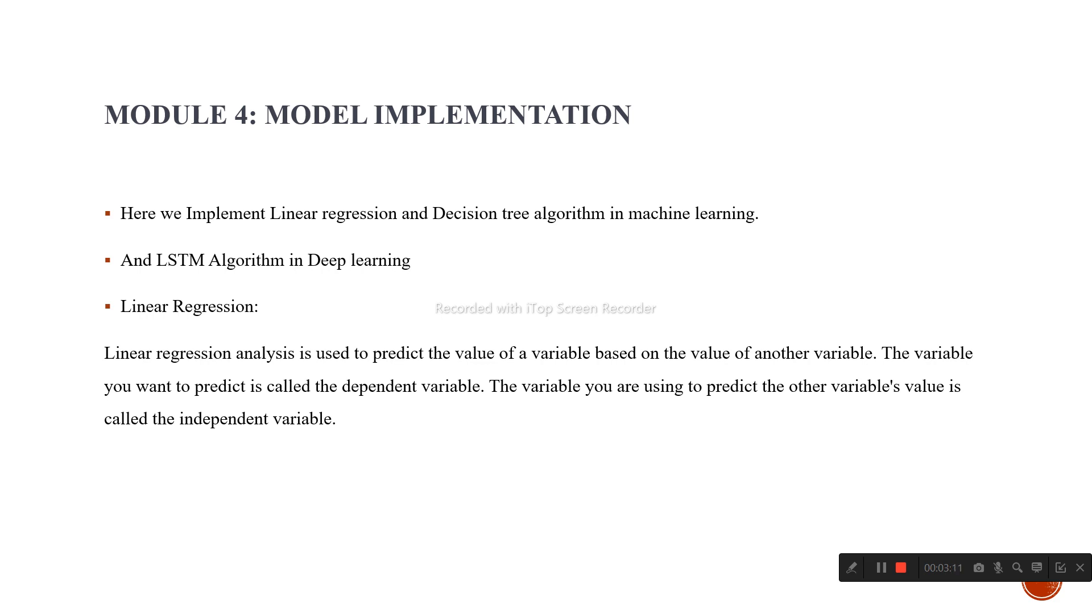For machine learning, we implement linear regression and decision tree algorithm. For deep learning, we use LSTM algorithm. Linear regression analysis is used to predict the value of a variable. The variable you want to predict is called the dependent variable, and the variable you're using to predict is called the independent variable.